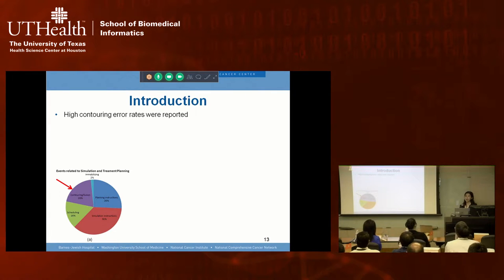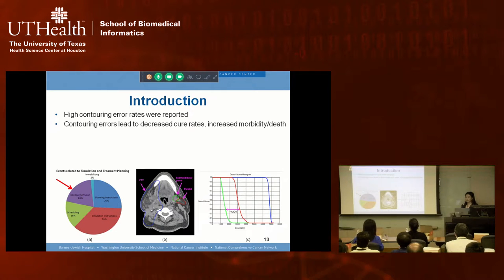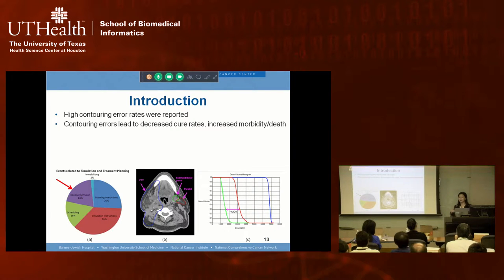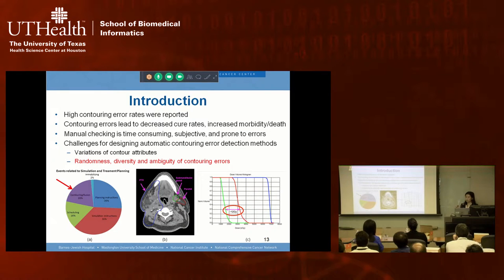Contour errors are severe in clinical practice—more than 20% of errors are due to contouring. In a head and neck cancer example, mislabeling the parotid and submandibular gland—which have different radiation dose tolerances—can cause the parotid to receive 12 Gy more dose than intended. Receiving 12 Gy on a normal organ can defunction it and eventually lead to patient death. Double-checking is mandatory, but manual checking is time-consuming, subjective, and error-prone.